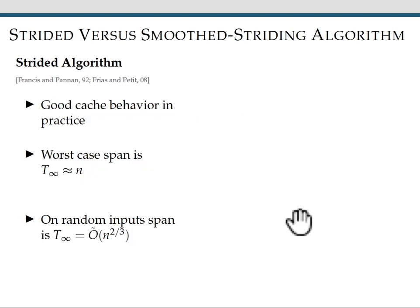Now let me expand on these theoretical guarantees by comparing the smoothed-striding algorithm to the strided algorithm, which the smoothed-striding algorithm comes from. So, the strided algorithm has good cache behavior in practice, which makes it fast in practice. However, there are some inputs on which it has very bad span, span linear. In particular, this means that it's not achieving any speed up despite how many processors you throw at it.